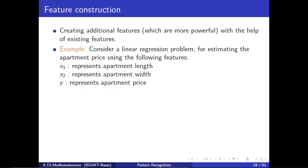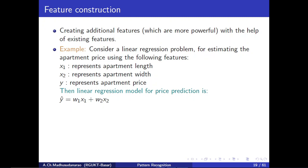We need to predict the apartment price y with the help of these two features x1 and x2. Here apartment means one flat in an apartment. The linear regression model for price prediction is y-hat equals w1*x1 plus w2*x2. In this linear regression model, our target is to estimate the parameters w1 and w2 with the help of training data.